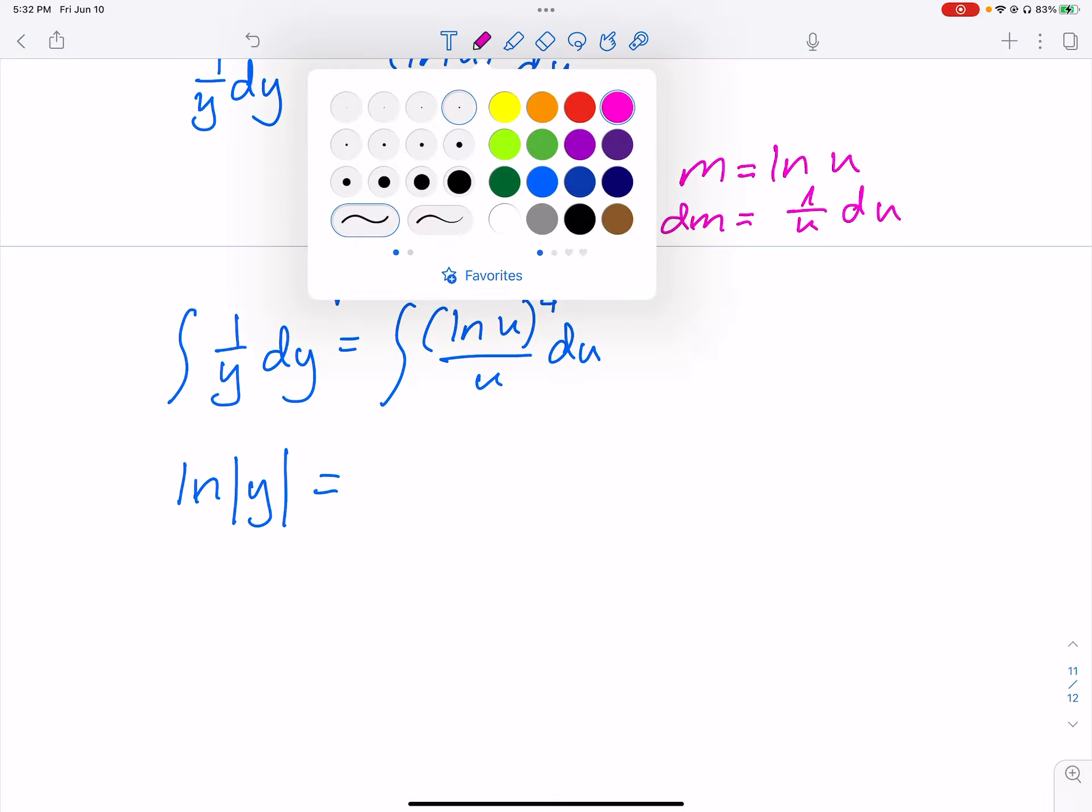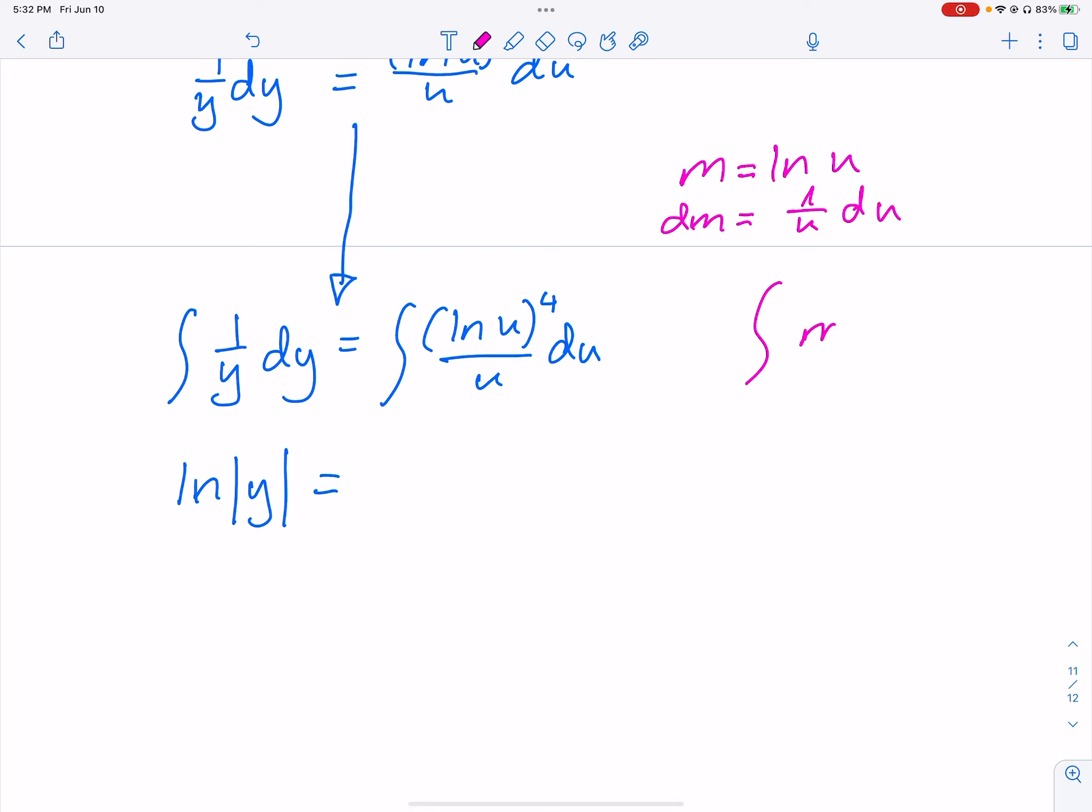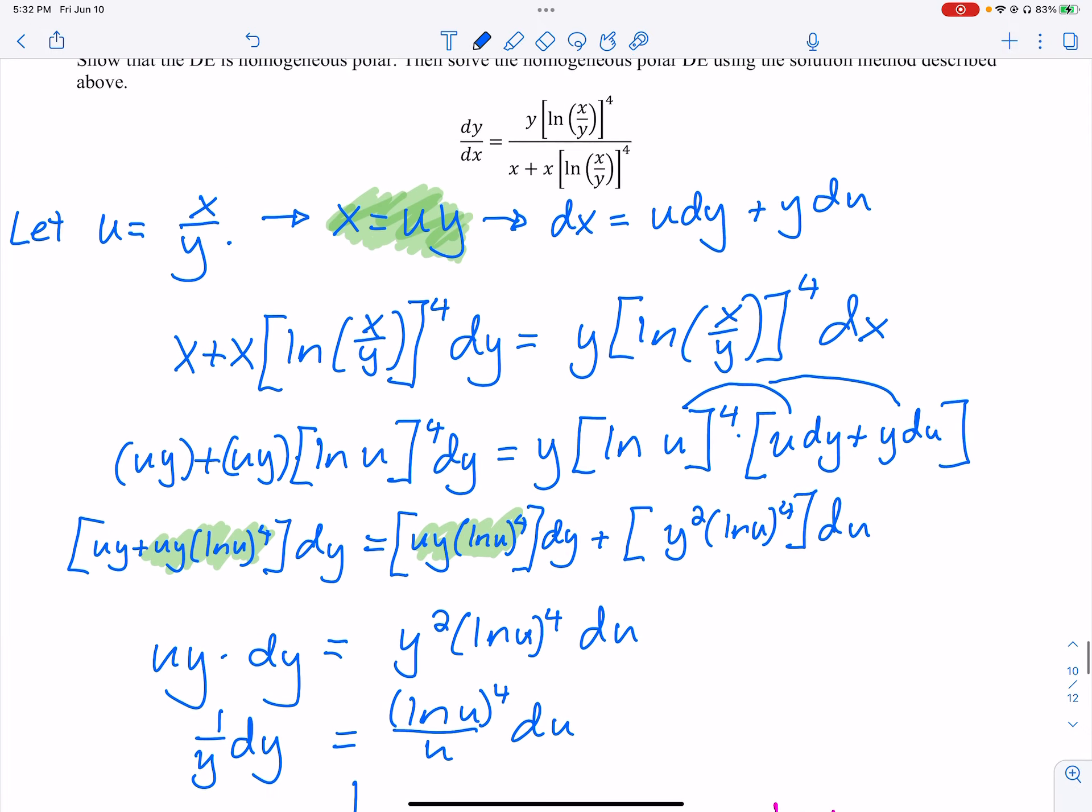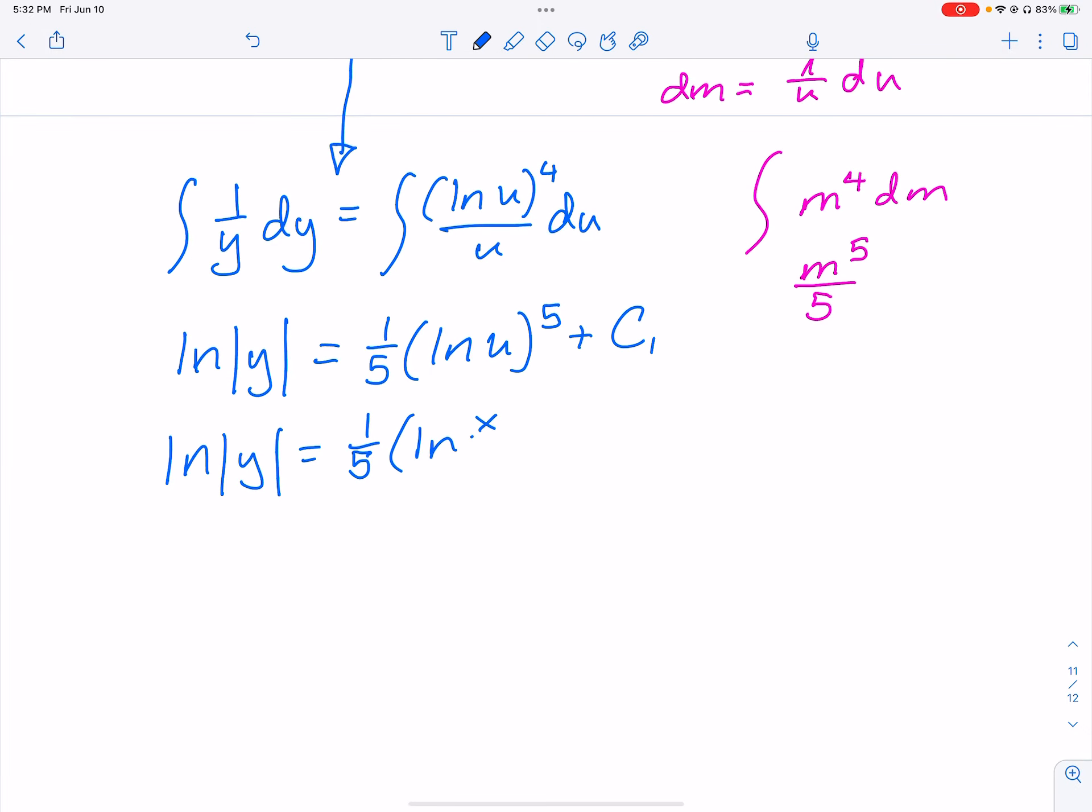And that substitution made that nasty problem not too horrible. This is a nice, easy ln of y. The right-hand side, though, let's do an m substitution. We can't do u because it's already u. m is ln of u, so dm is 1 over u du. So this is actually equal to m to the fourth dm. So this is m to the fifth over five. I got ln x over y to the fifth plus c1.